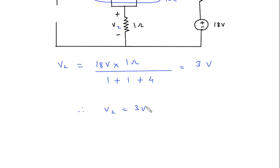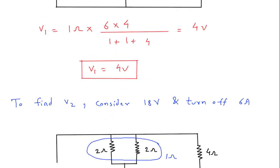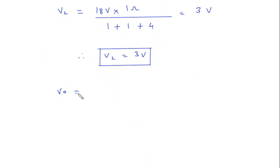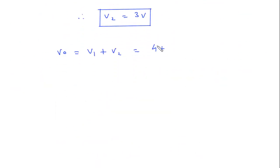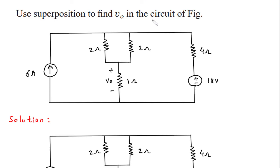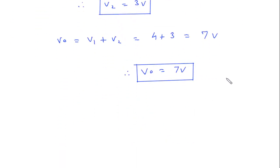Therefore V2 is equal to 3 volt. V1 is equal to 4 volt and V2 is equal to 3 volt. Vo equals V1 plus V2, so Vo equals 4 plus 3, which is 7 volt. Therefore Vo is equal to 7 volt using the superposition theorem.